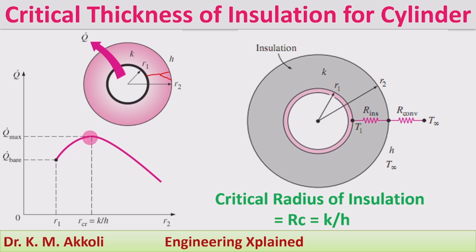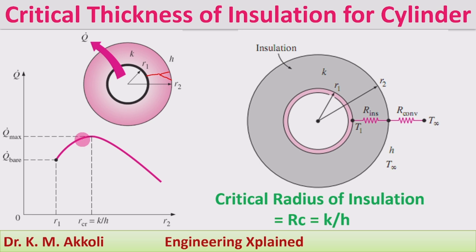We add insulation up to radius r2, which may be at or below the critical thickness. Up to the critical thickness — given by the ratio k/h, which is to be derived — the rate of heat transfer goes on increasing and reaches a maximum at the critical thickness of insulation. Beyond that, any additional insulation causes the rate of heat transfer to decrease. That is the concept of critical thickness of insulation.